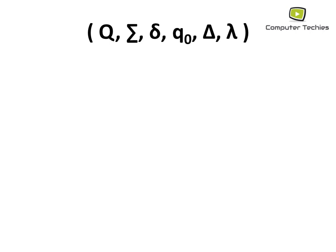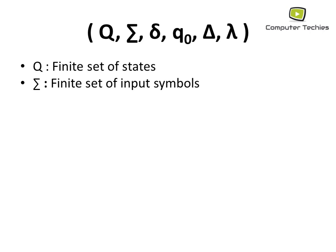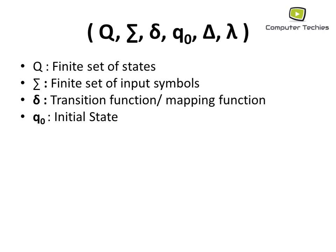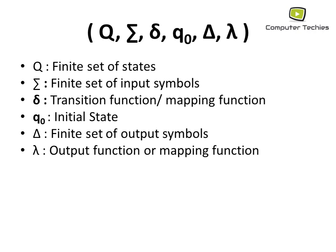The next tuple representation is the six-tuple representation: Q, Σ, δ, Q0, Δ, and λ. Comparing with the previous five-tuple, the first four members are constant and the final state F is replaced by Δ and λ. Q is the finite set of states, Σ is the input symbols, δ is the transition function, Q0 is the initial state, Δ is the finite set of output symbols, and λ is the output function that maps to the output.